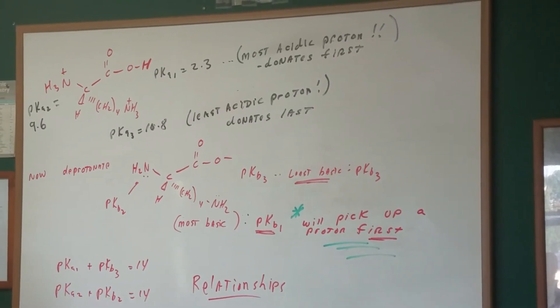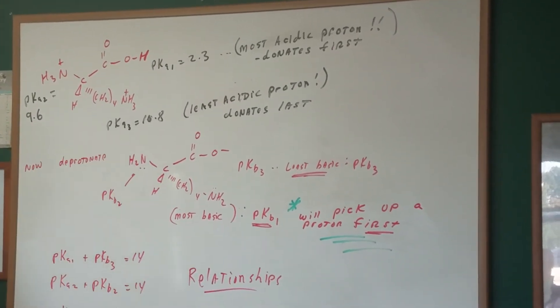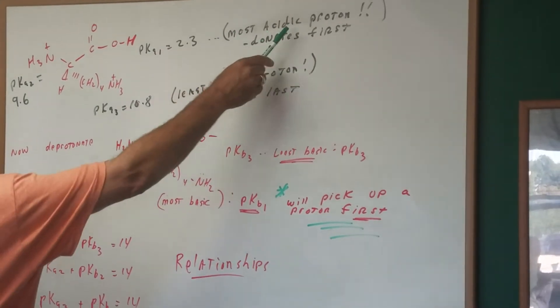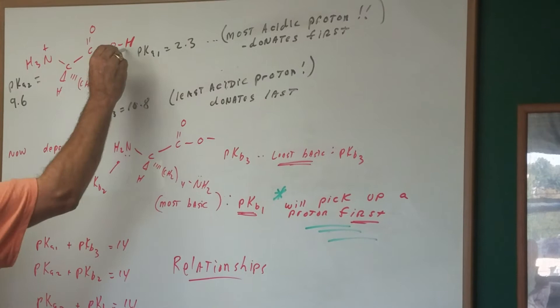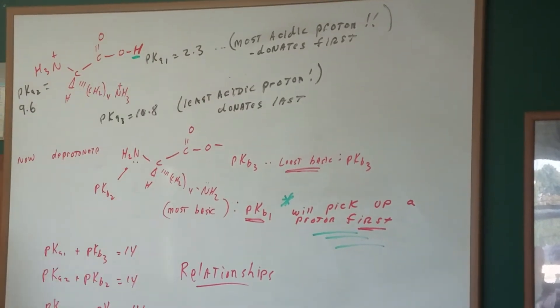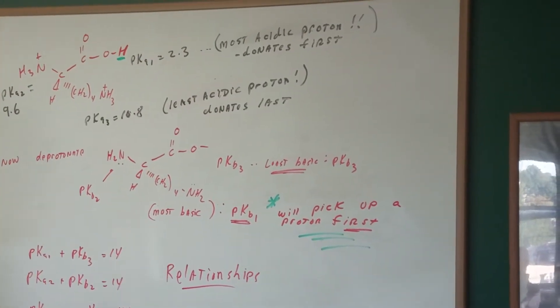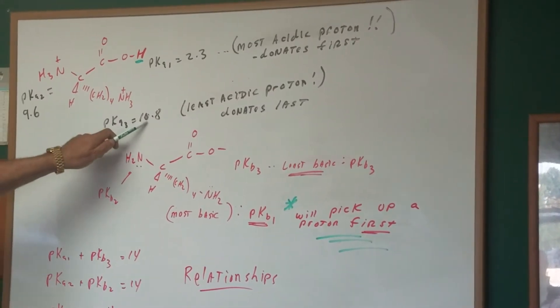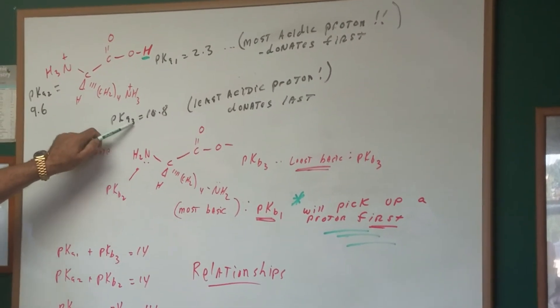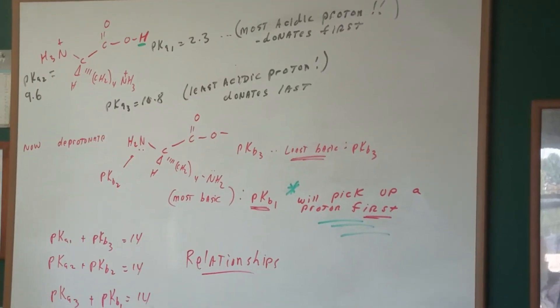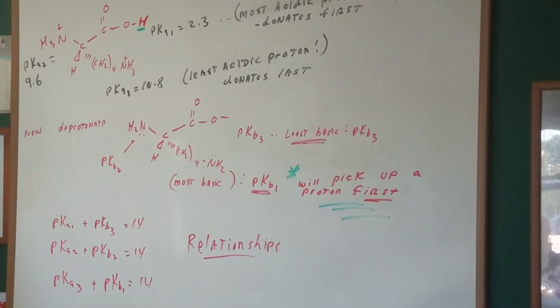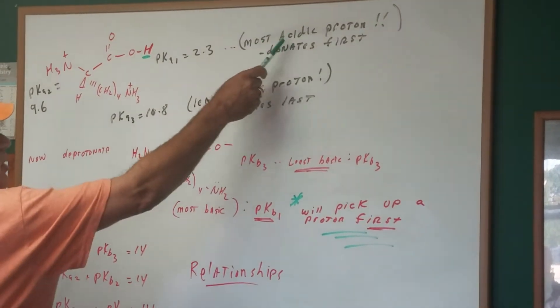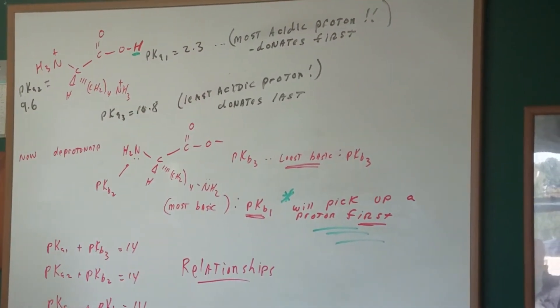Before we start, we want to make sure we understand PKA1 represents the most acidic proton. So the most acidic proton means this H would be the first one to come off, to be donating. The last one that will come off would be this one because it's got the highest PKA, and I assigned it as PKA3, meaning it would come off third. So the least acidic donates last, most acidic donates first.